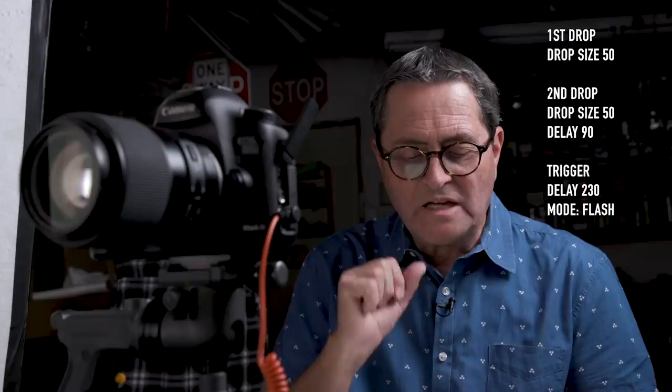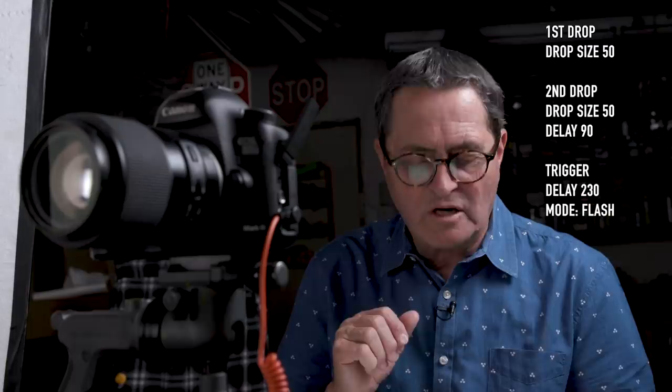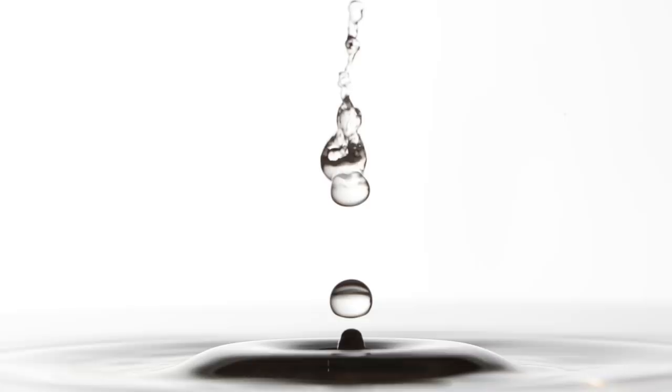So start with this. Drop size 50 on the first one, drop size 50 on the second one, a delay of 90 milliseconds, a trigger delay of 230 milliseconds with your dropper 8 inches from your pool of water. Something I'd better mention about the pool of water, I don't know if I said it earlier, is get it full right to the very top so that it's like an infinity pool. So I'm now looking and it's just kind of going to fall out of focus in the background. You're not going to see the back of the container. That makes it look really nice.